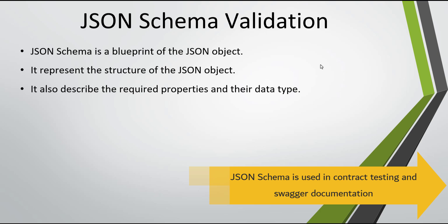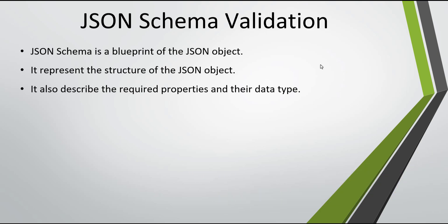JSON schema is commonly used in contract testing, and it is also used to represent the request body and response body of an API in the Swagger documentation. In this video I am going to discuss how, during testing, you can validate a JSON object used for the request body or the response body using the schema.